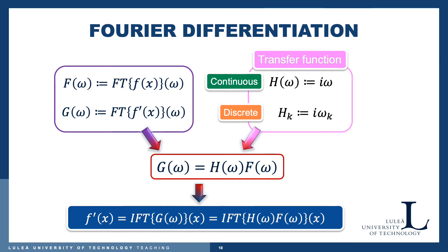The derivative of the function f(x) equals the inverse transformation of G(ω) evaluated in x, which is exactly the inverse transformation of the transfer function times the Fourier transformation of the function itself, evaluated in x.